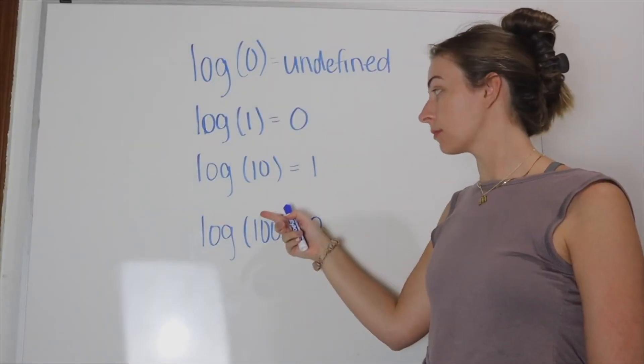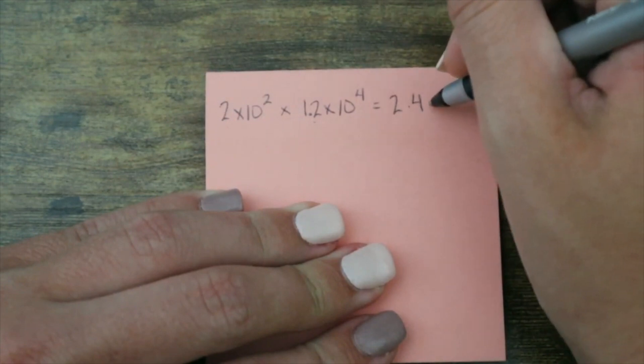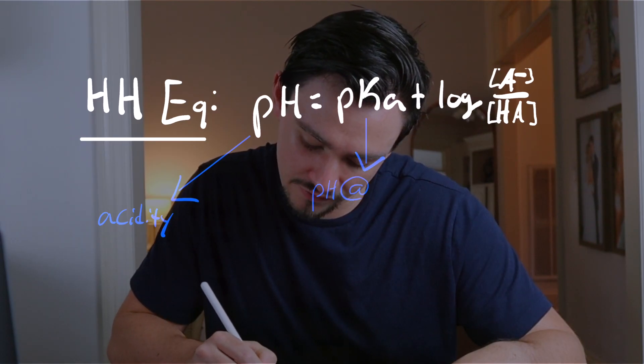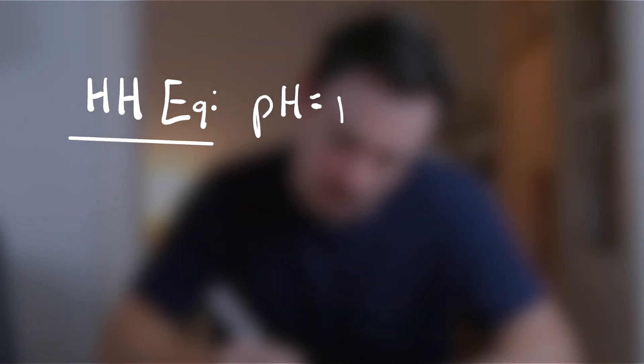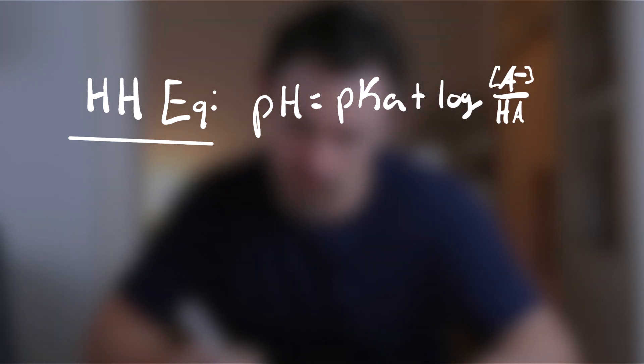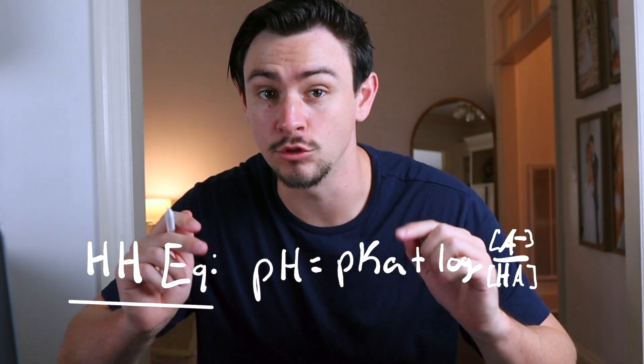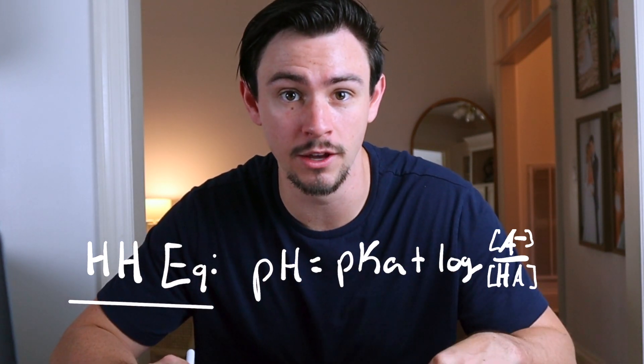We're taking on the math of the MCAT by showing you what mathematical manipulations are required and how they're frequently tested. This is just one video of our full MCAT math video series, and today I'm going to show you how the math of the Henderson-Hasselbalch equation is tested. The Henderson-Hasselbalch equation states that pH is equal to pKa plus the log of base over acid, and these are concentration values. Remember that equation — I'm going to quiz you on it during this video.